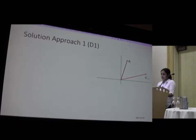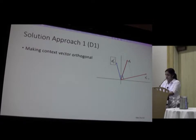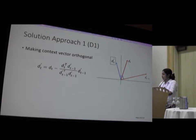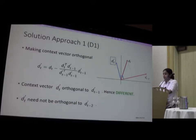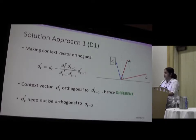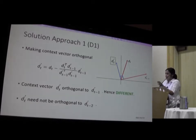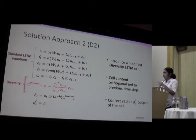One solution is to make the context vector orthogonal to the previous time step while feeding it in — ensuring that the new context vector fed to the decoder at time t is orthogonal to the one fed at time step t minus 1. This constraint helps, but it might not solve the problem of phrases like 'minimum wage of 15 dollars' being repeated, since the context that is being repeated was way back in time.